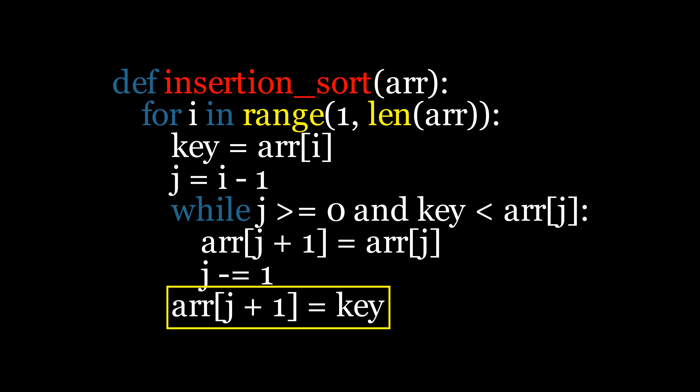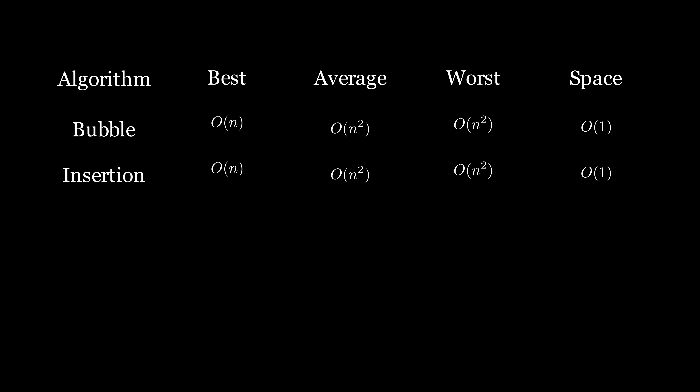This ensures the current element is inserted into the sorted portion of the array. The time complexity of insertion sort in the best case, when the array is already sorted, is linear, because no shifting is required and the inner loop does not run. However, in the average and worst cases, the time complexity is O(n²) due to the shifting of elements — both nested loops run, resulting in more comparisons and shifts. The space complexity is constant, because the algorithm sorts the array in place and does not require extra space beyond a few variables.